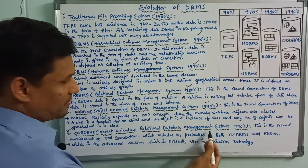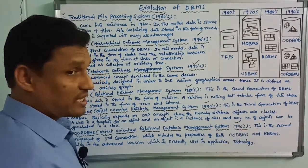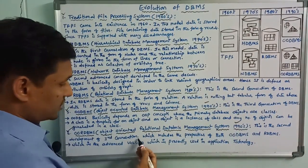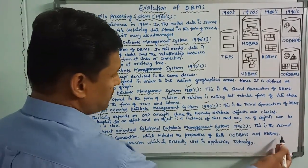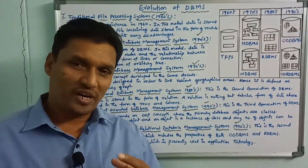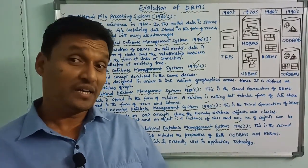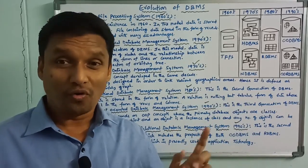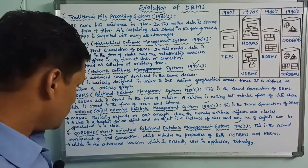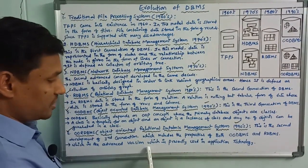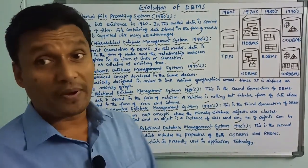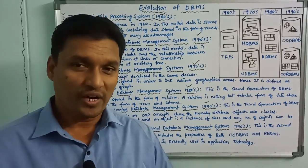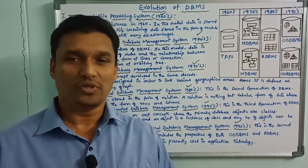OORDBMS — object-oriented relational database management system — is the second development of the third generation. It includes the properties of both OODBMS and RDBMS, combining object-oriented and relational database management concepts. This is the advanced version presently used in application technology.